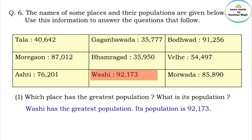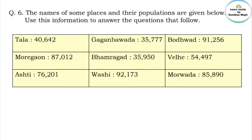Vashi has the greatest population. Its population is 92,173.